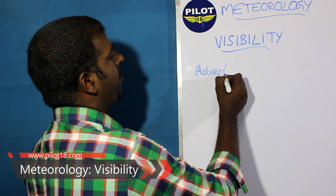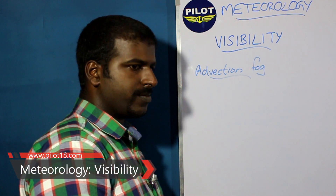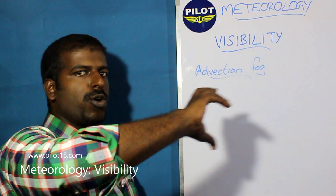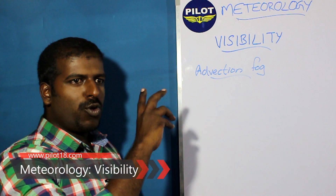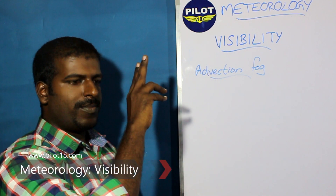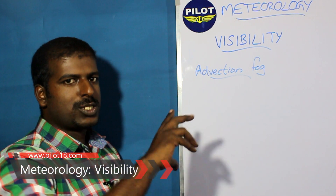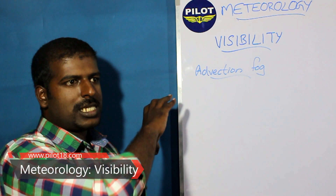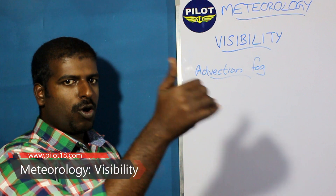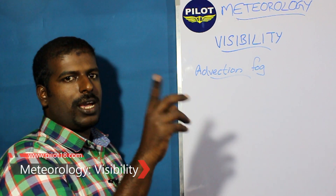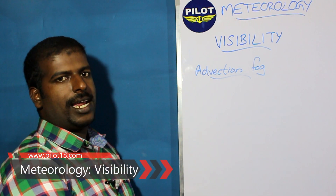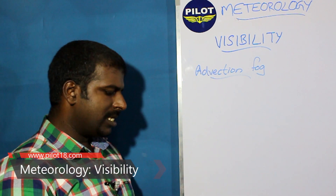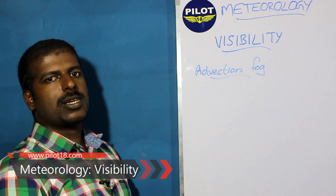Advection fog forms when warm, moist air moves over a cold surface — either sea or land. Heat energy is transferred toward the cold surface, causing fog to build up. Unlike radiation fog, which occurs only over land, advection fog can occur over both sea and land.